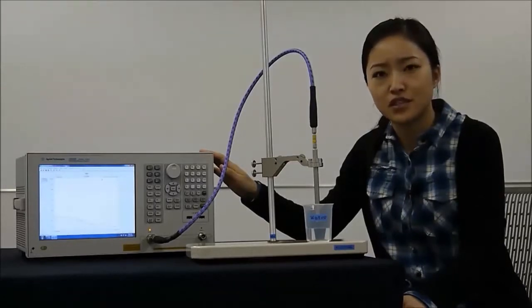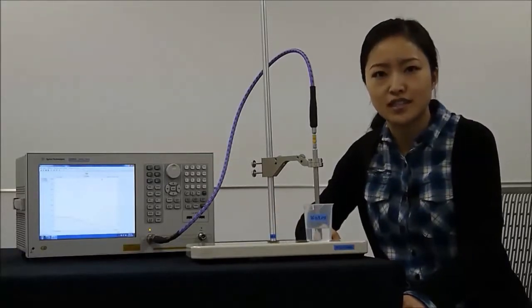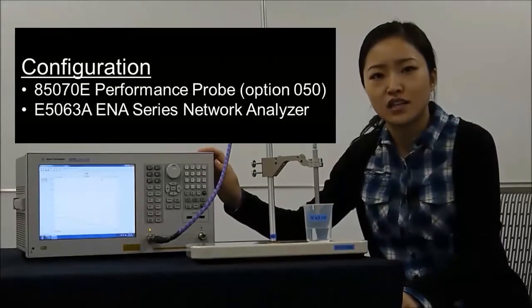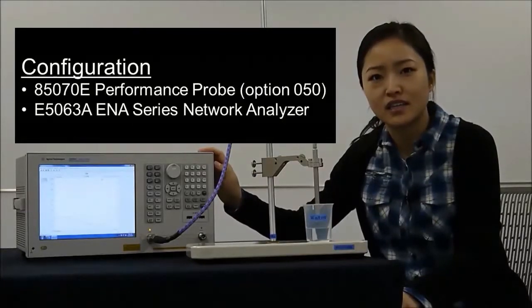The system can measure liquid materials quickly and conveniently. You can set up the system in minutes and measure materials in seconds. A typical coaxial probe system consists of a vector network analyzer, an open-ended coaxial probe and software.